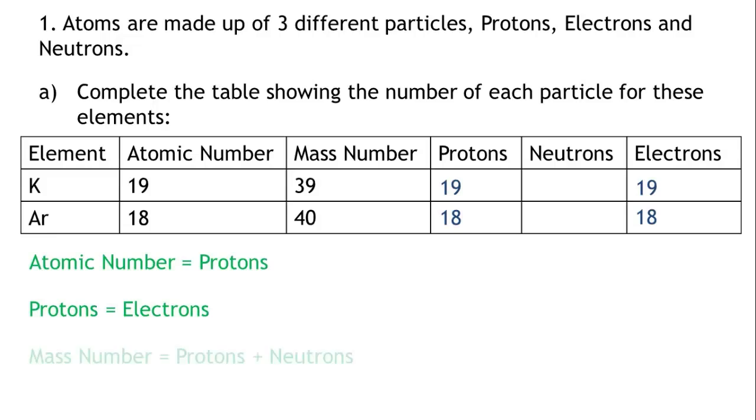Mass number equals the number of protons plus the number of neutrons. We can rearrange this formula to give us neutrons equals mass number minus protons.